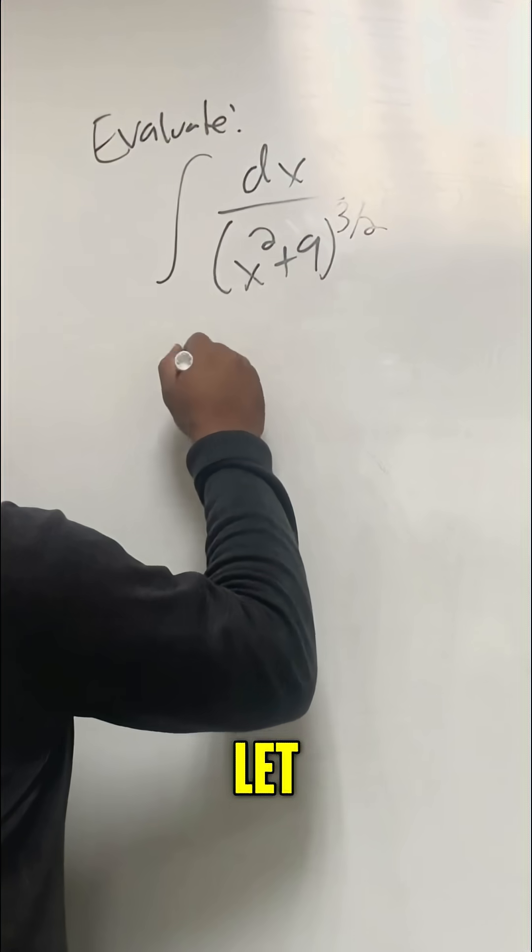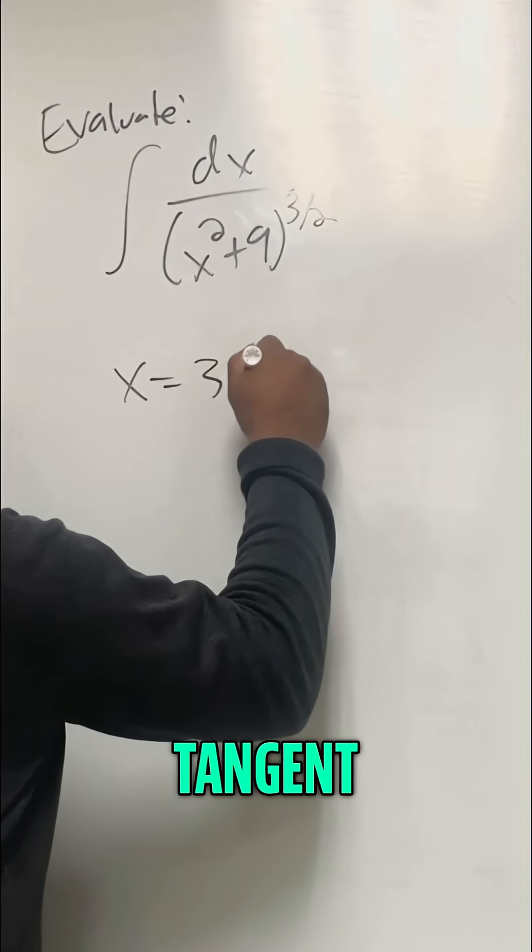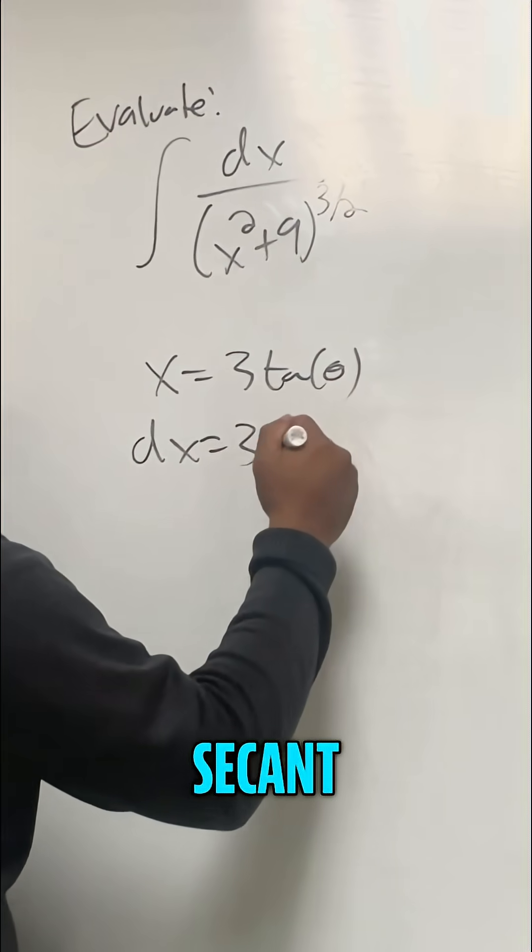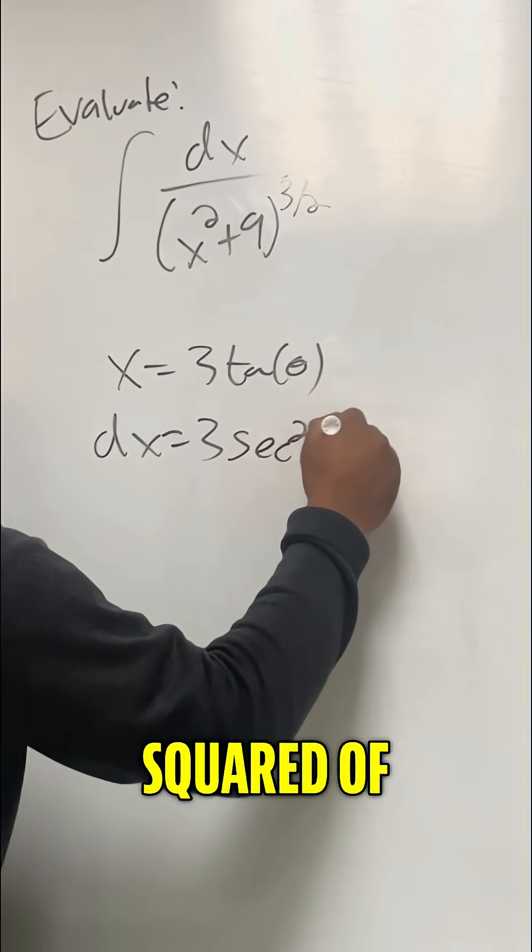Let's be using a trig sub, right? Let x equal 3 tangent of theta. Well, then we know that dx would equal the derivative of tan is secant squared, 3 secant squared of theta d theta.